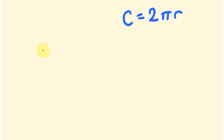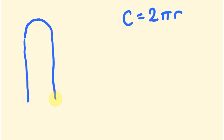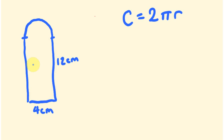Say you were asked to work out this particular shape — we have a doorway which had a half arch, with a rectangular bottom. This here is 4 centimetres — the diameter across the arch — and this, from here to here, is 12 centimetres. So let's work out the perimeter here.